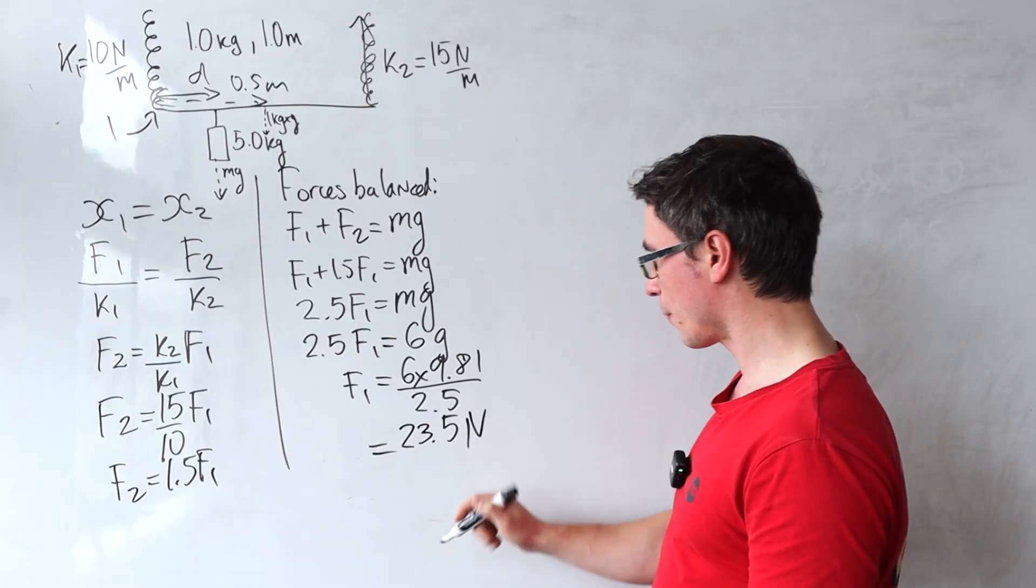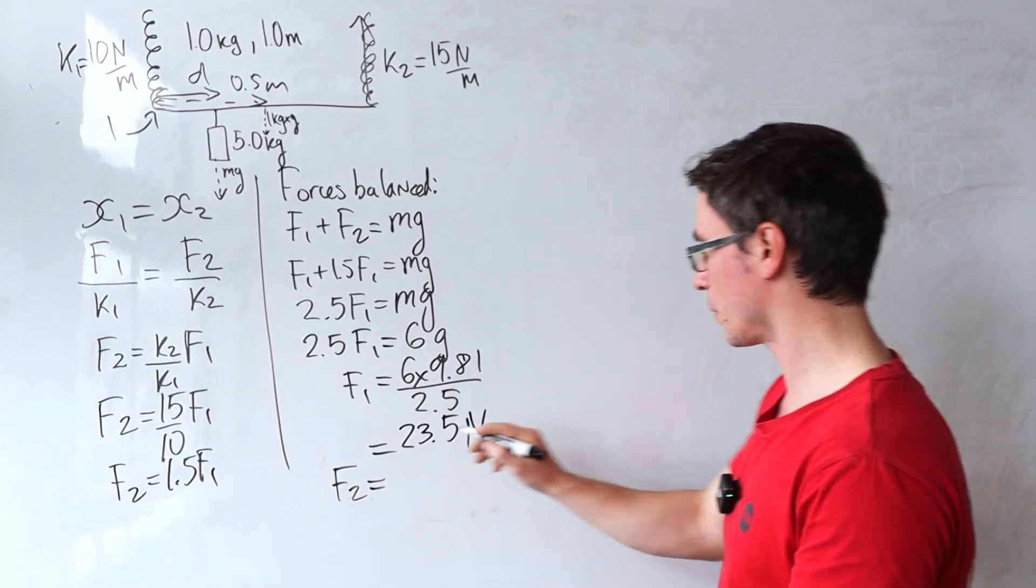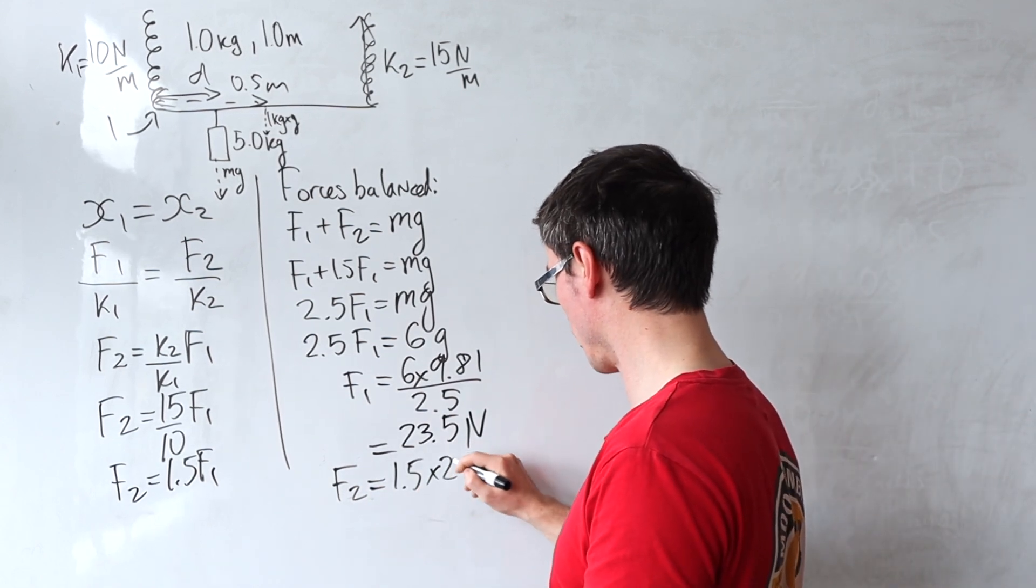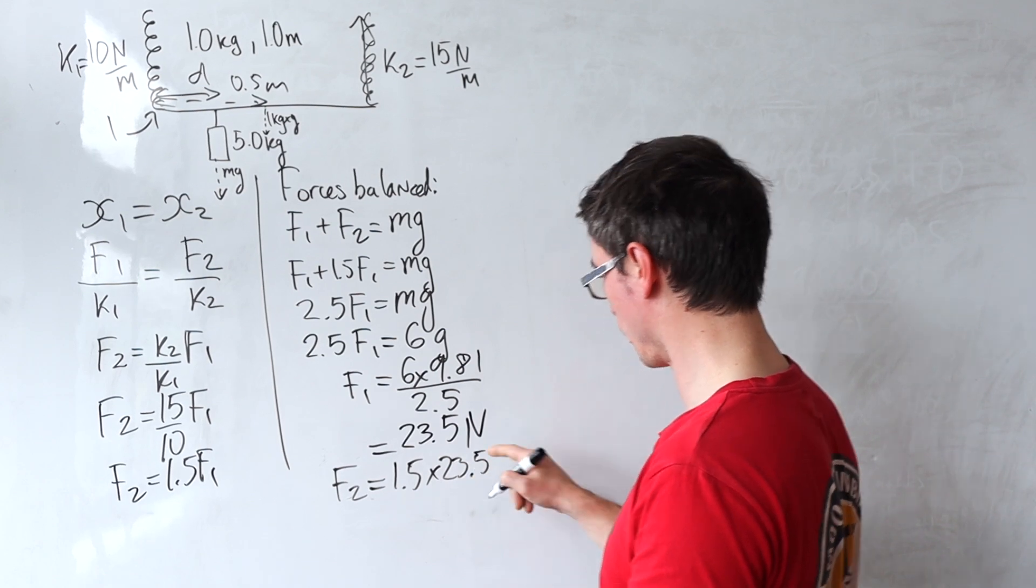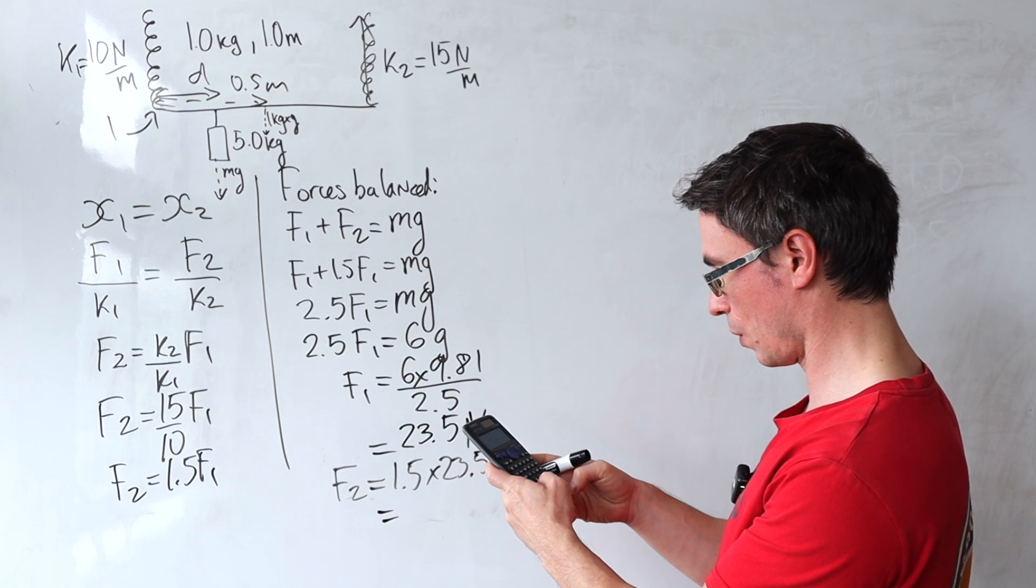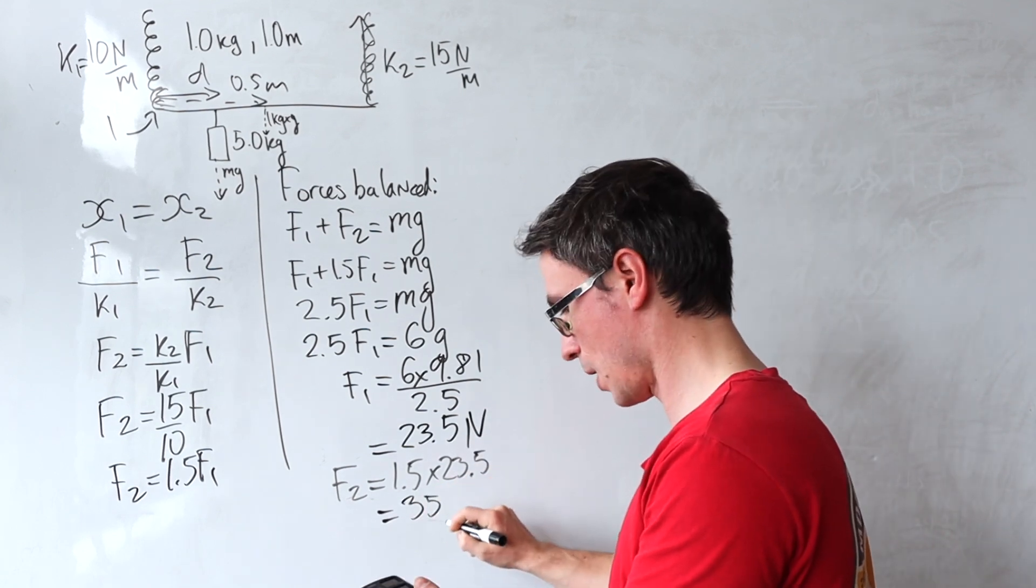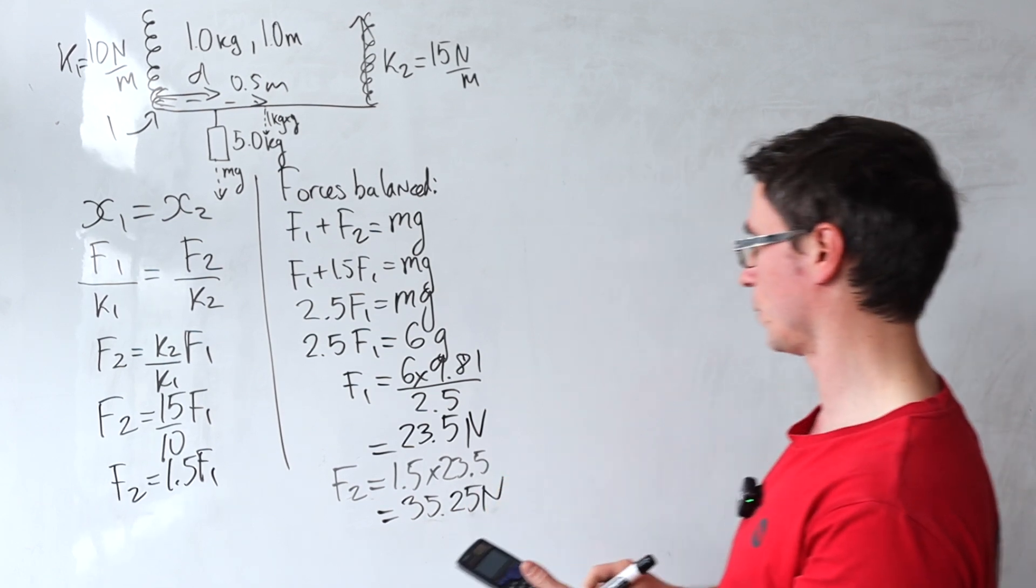So now that we have f1, we can figure out what f2 is, because this here is just equal to 1.5 multiplied by that number 23.5, and this here is going to give me around 35.25 newtons.